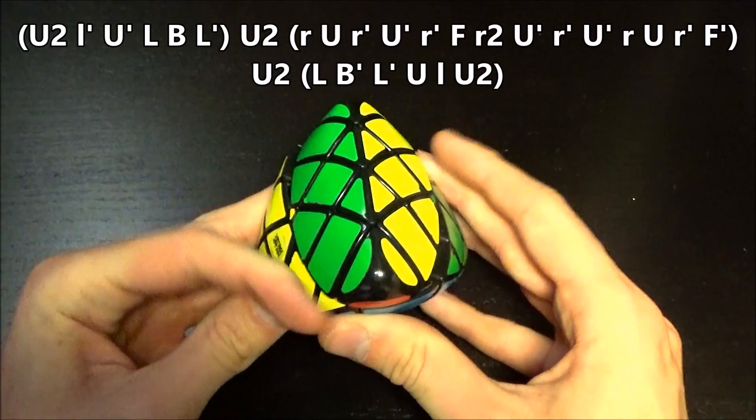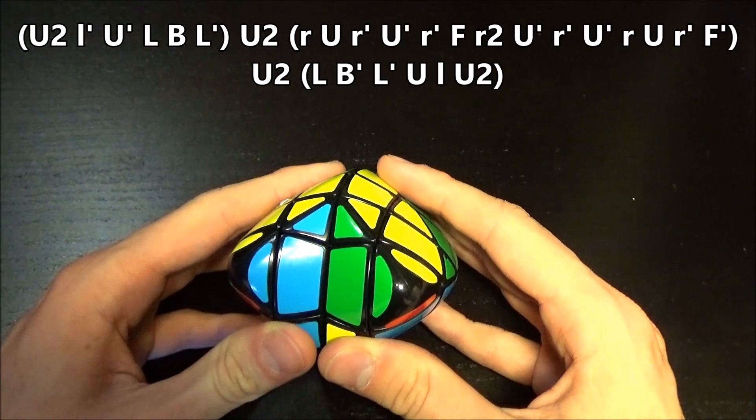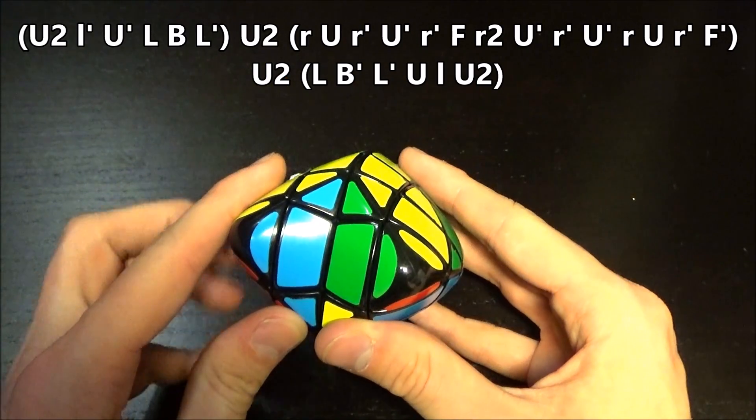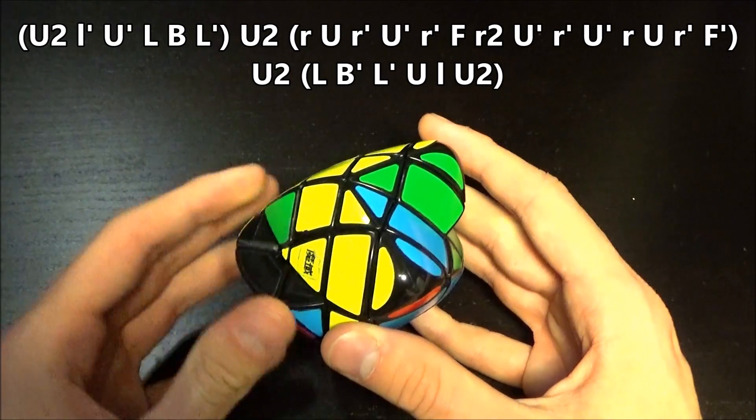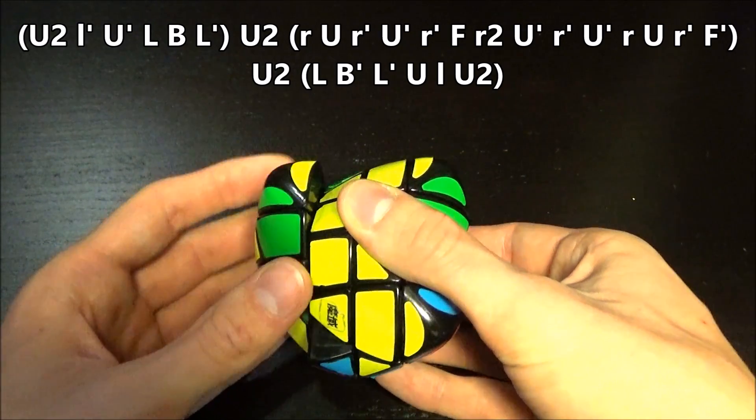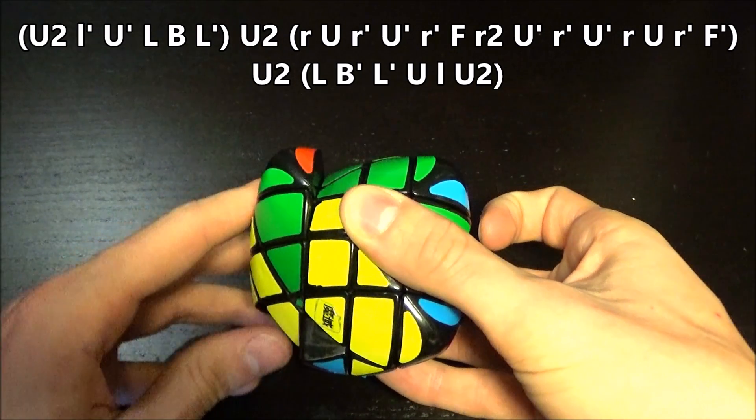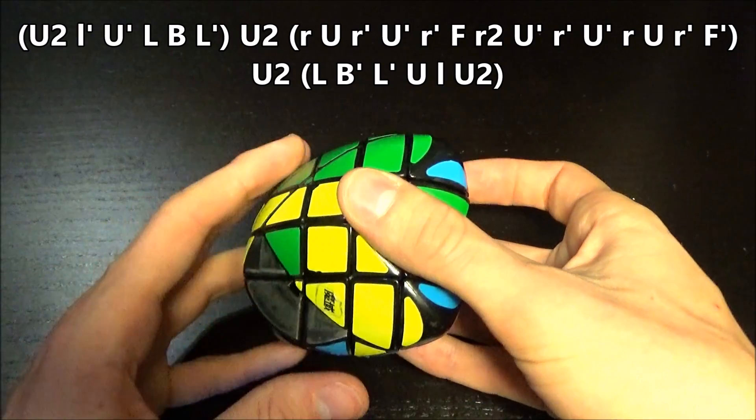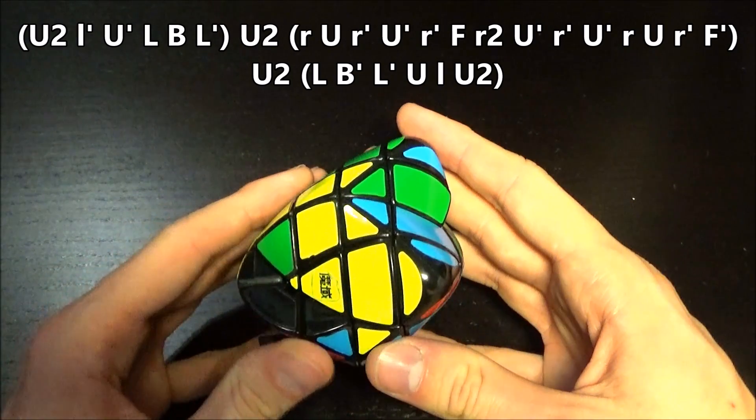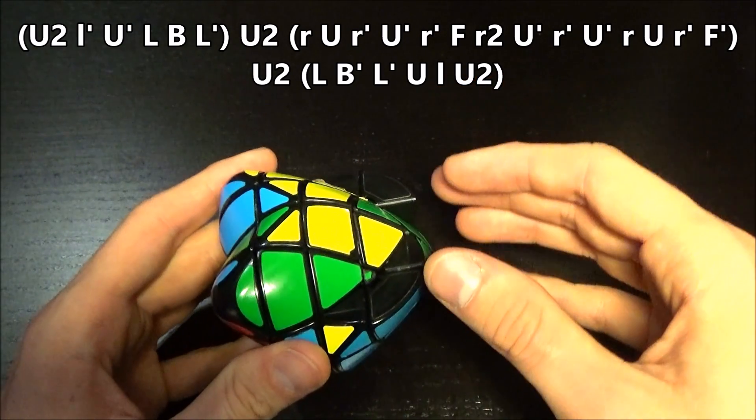Up 2, Left Inverted, Up 2, Left Inverted, Up 2 Inverted, Left, Left Inverted, Up 2. And now a T-perm.